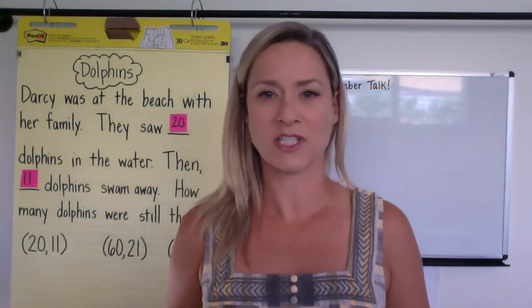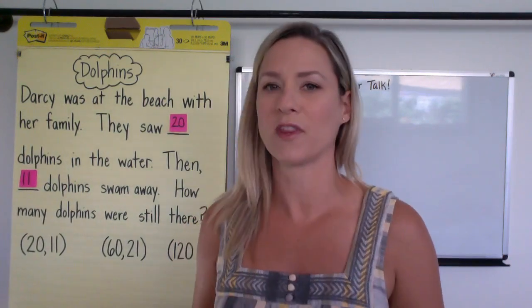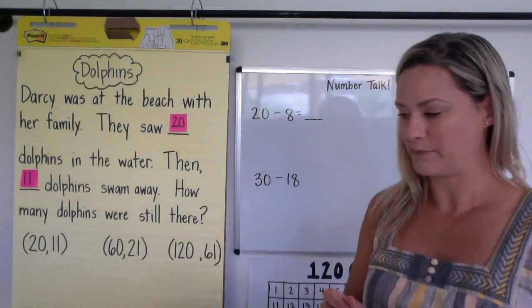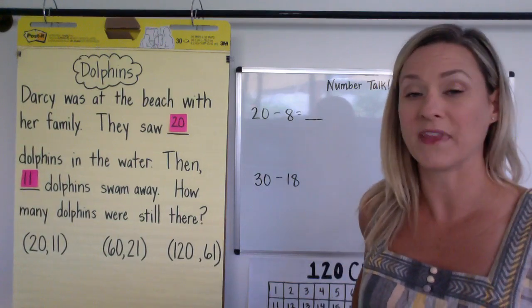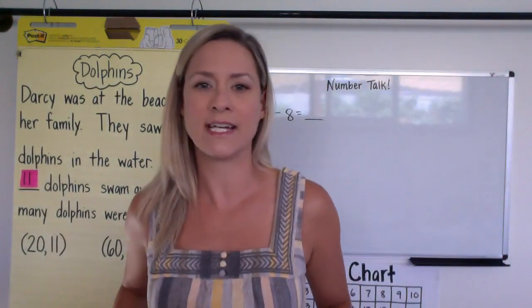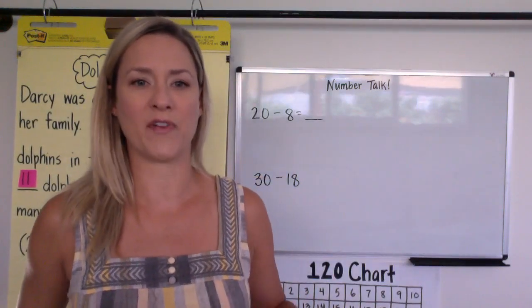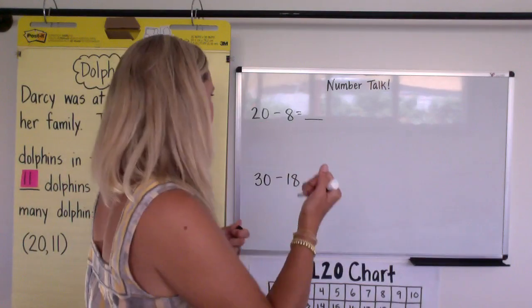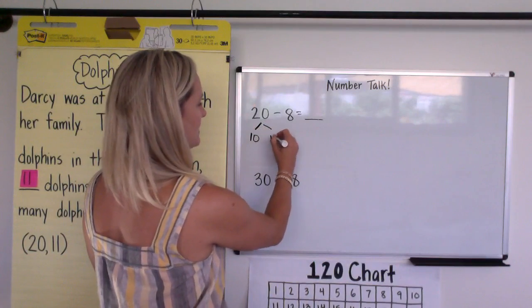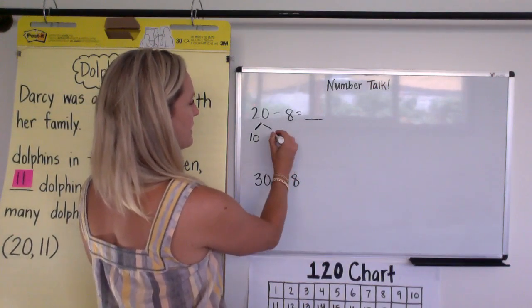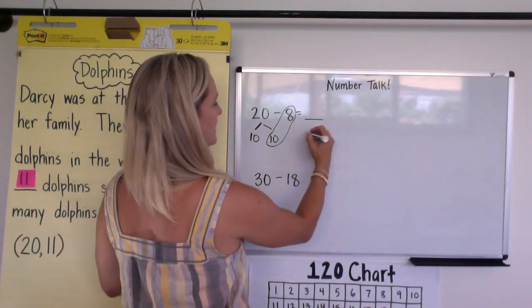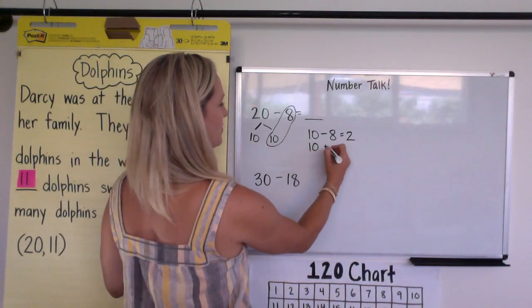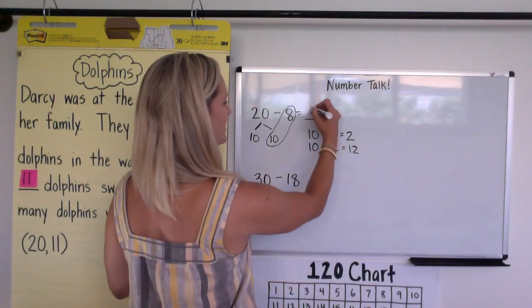The first thing I'm going to do with your child is a number talk, and this is all mental math. The first question I will ask is 20 minus 8. I'll give your kids time to think, and then they may think about 10 minus 8 is 2, and then they would have had 10 left. So they may separate the 20 out into two different 10s in their minds. 10 and 10 is 20, and then some kids may do this first: 10 minus 8 equals 2, and then they have 10 left, so they do 10 plus 2 is 12, so they know the answer is 12.